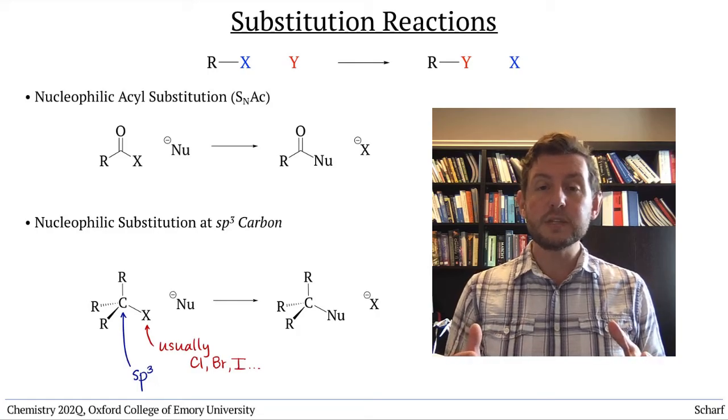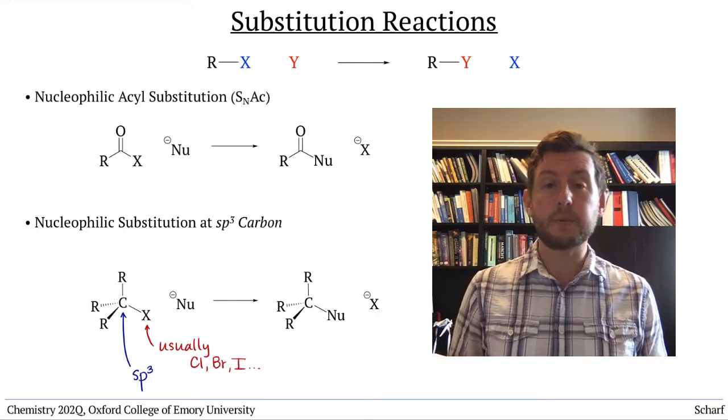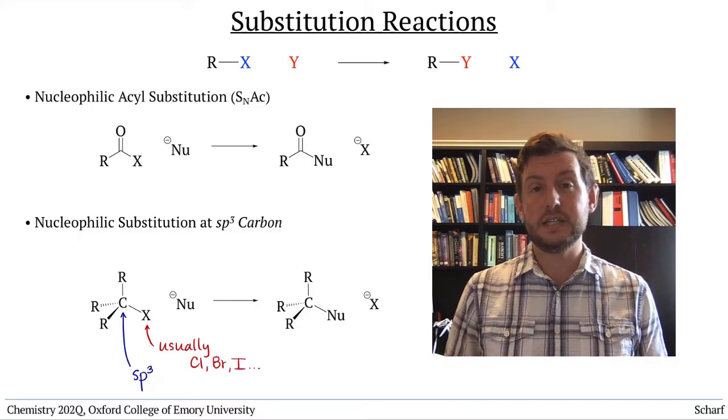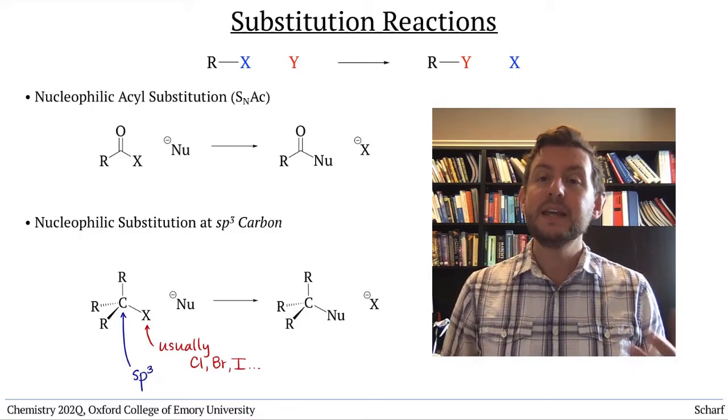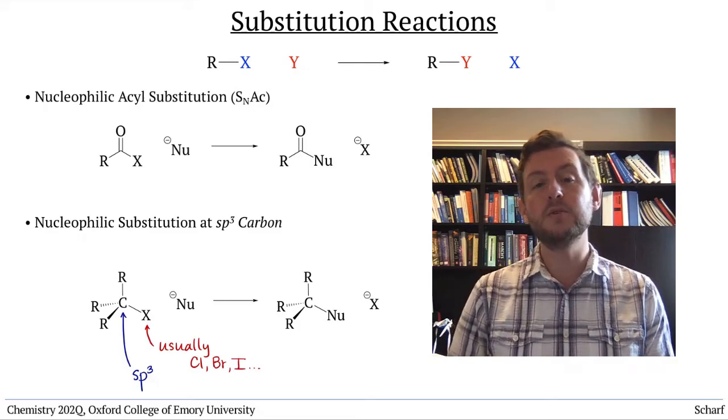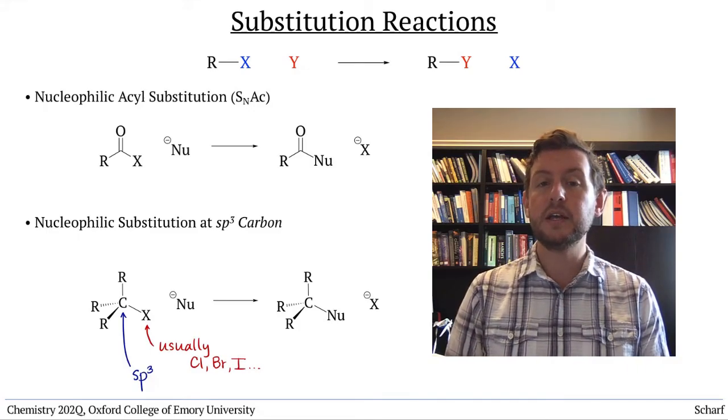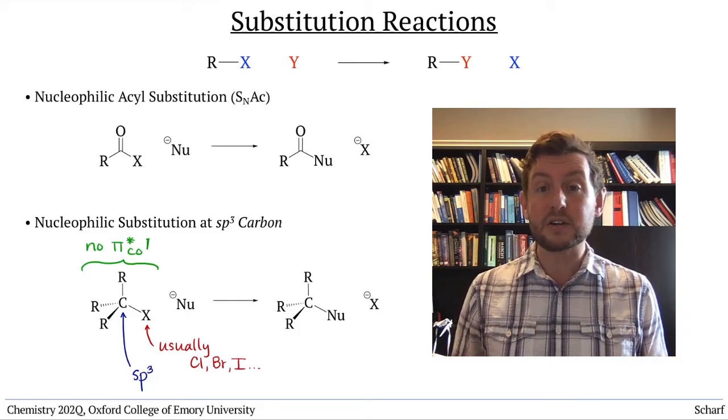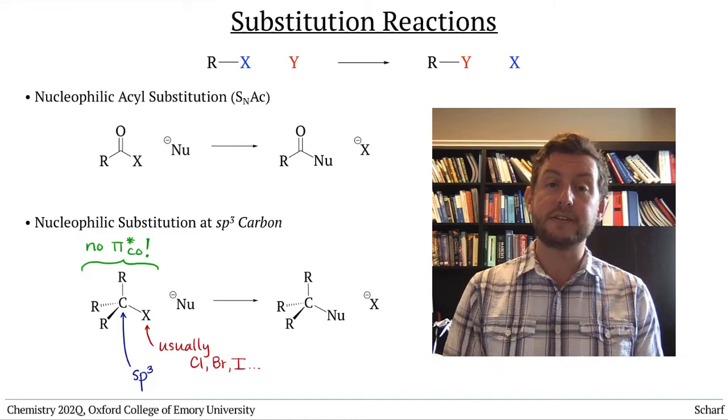These sorts of leaving groups can also be replaced by nucleophiles. But the way this happens, the mechanism, is necessarily different from nucleophilic acyl substitution, because these sp3 alkyl halides don't have pi star CO orbitals for nucleophiles to attack.